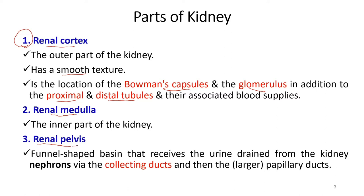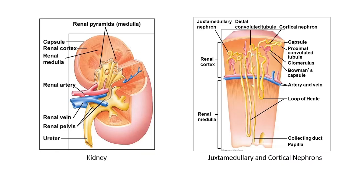The renal pelvis is funnel-shaped and receives urine drained from the kidney, then passes it via a cavity to the ureter. The outer layer is the renal cortex and the inner is the renal medulla. The renal artery, shown in red, carries oxygenated blood. The renal vein, shown in blue, drains blood. The renal pelvis, also shown in blue, collects urine and exits the kidney via the ureter.